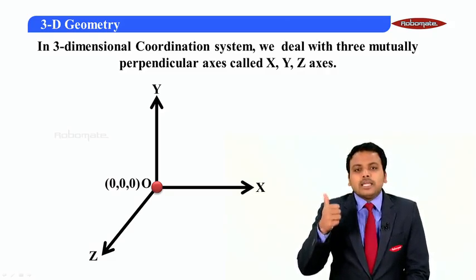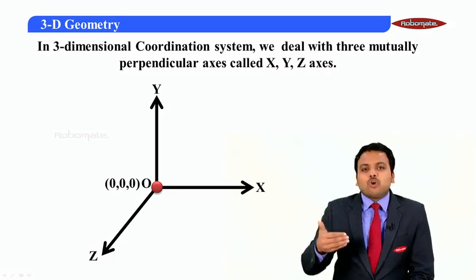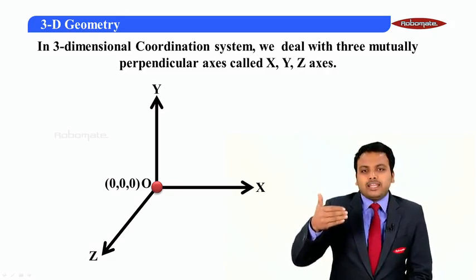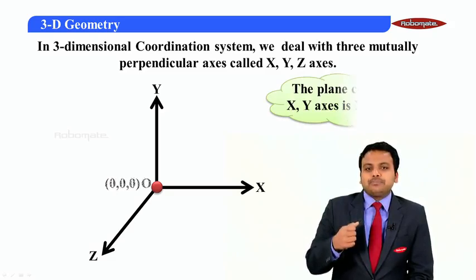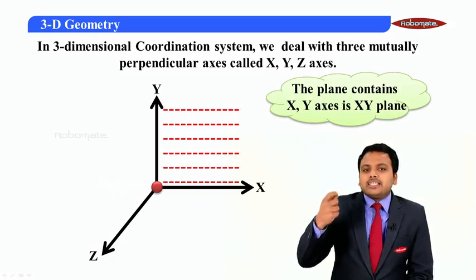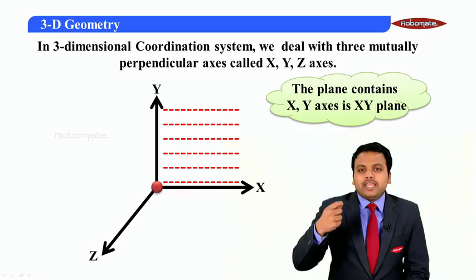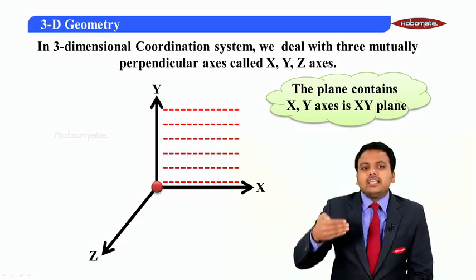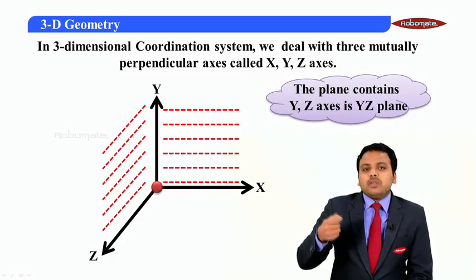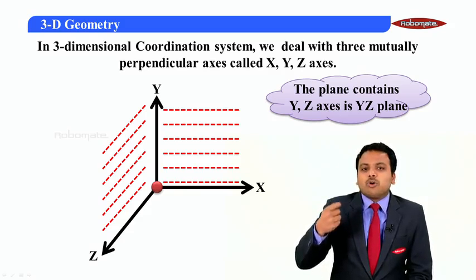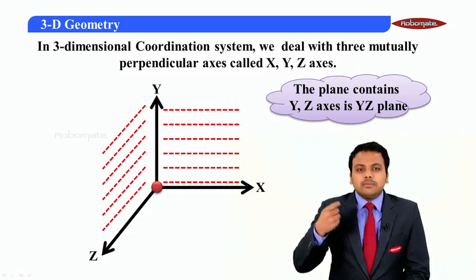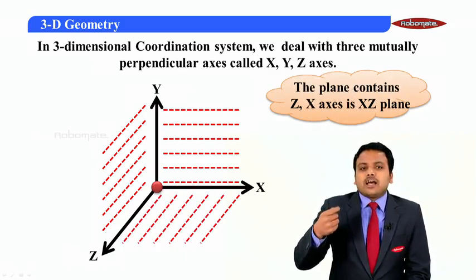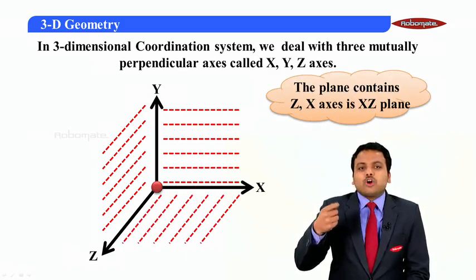Apart from lines and points, in 3D we will have planes also. The plane that contains the x-axis and y-axis is the xy-plane. Similarly, the plane containing the y-axis and z-axis is called the yz-plane. And the plane containing the x-axis and z-axis is called the zx-plane.